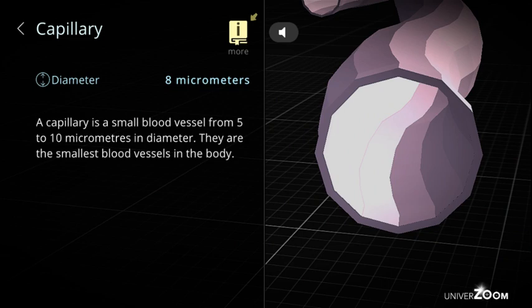Capillary, diameter: 8 micrometers. A capillary is a small blood vessel from 5 to 10 micrometers in diameter. They are the smallest blood vessels in the body.